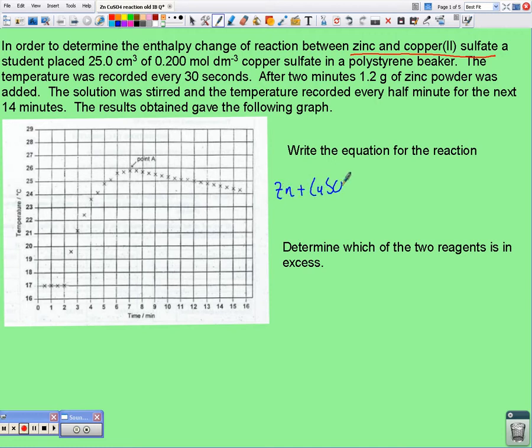So zinc and copper sulfate undergo a redox reaction or a metal displacement reaction, in which the copper is displaced by the more reactive zinc. And we can see straight away that that balances nicely, so we've got a one-to-one ratio of the reactants.